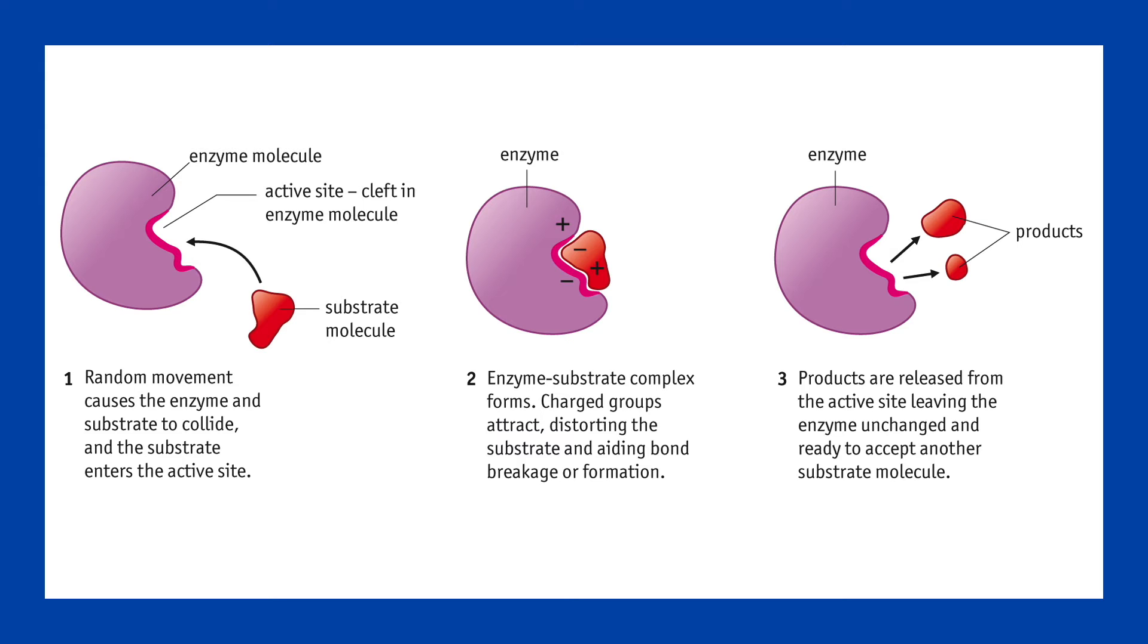Enzymes are specific to the reaction that they are catalyzing, and so each chemical reaction in the body is likely to have its own enzyme. The precise 3D shape of an enzyme includes a specific region called the active site, and this is the part of the enzyme molecule with the catalytic function. The active site has a specific shape in order to accommodate for the reactants of one specific chemical reaction.